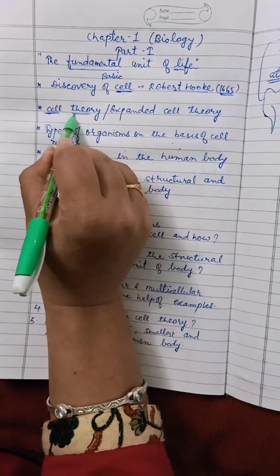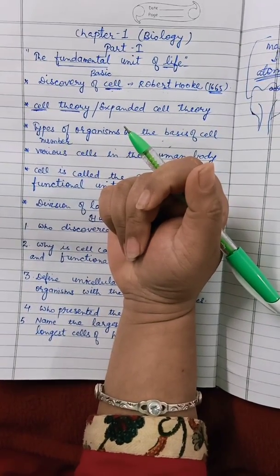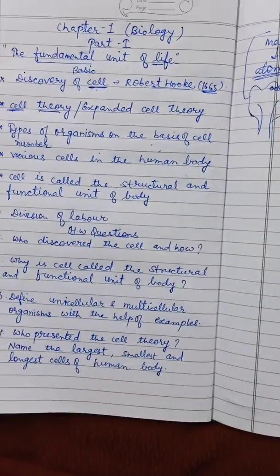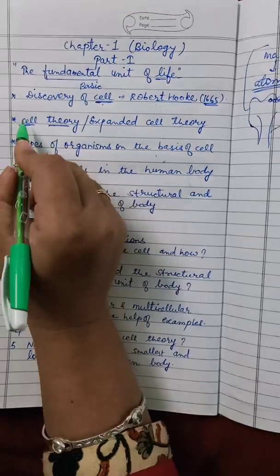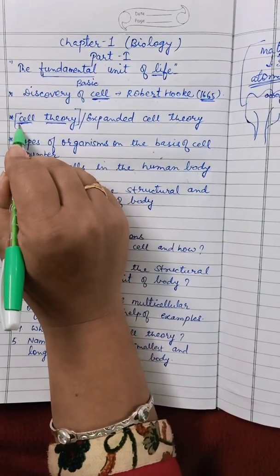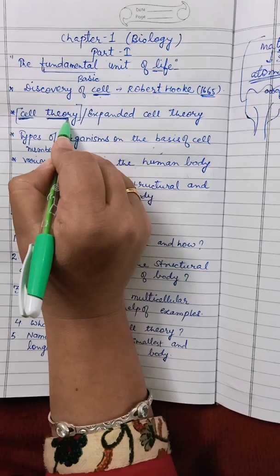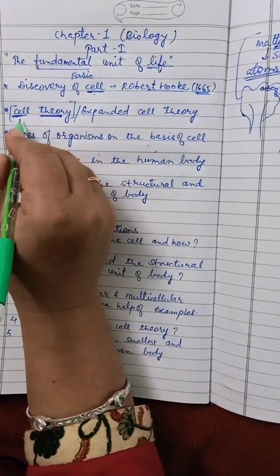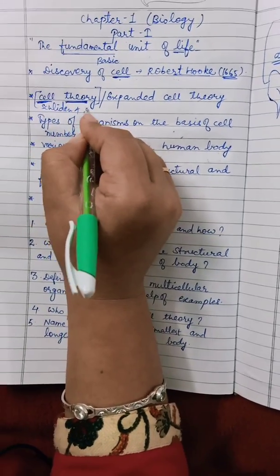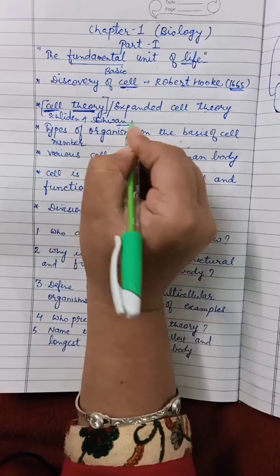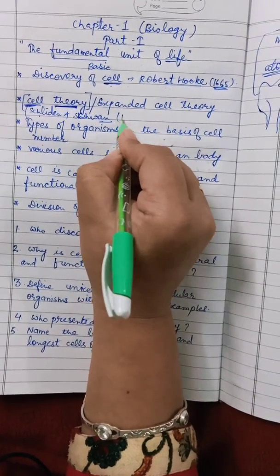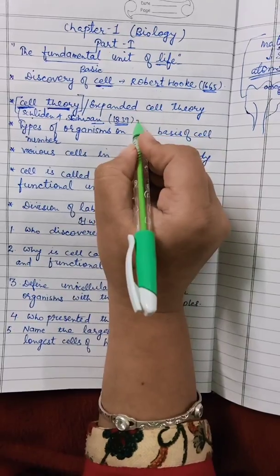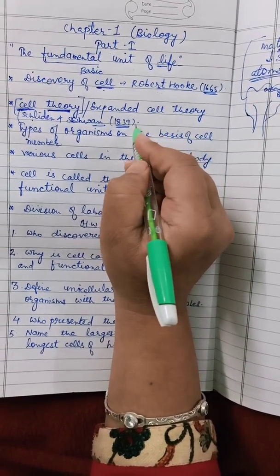Now let's know about the cell theory. In 1838, M.J. Schleiden, and in 1839, both scientists M.J. Schleiden and T. Schwann gave the cell theory. The cell theory states that all living organisms are made up of cells and cell is the basic unit of life.